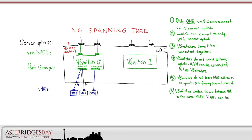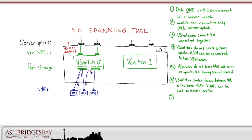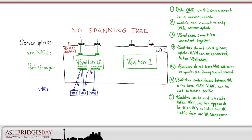We can't switch a frame from a vNIC in one VLAN to a vNIC in another. vSwitches can also be used to isolate traffic. We'll use this approach for UC on UCS to isolate our UC traffic from our VM management traffic. We'll put all our UC VMs on one vSwitch in different VLANs if desired, while our VMkernel traffic — management, vMotion, and IP storage — is switched in a separate vSwitch with separate uplinks.